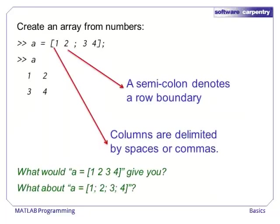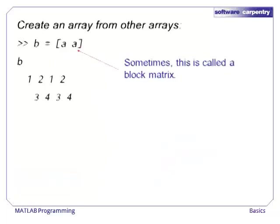Arrays can be created from the MATLAB prompt. When you assign an array, the entire set of numbers is enclosed in brackets. Elements in the same row are separated by spaces or commas, and a semicolon denotes a row boundary. Just like in linear algebra, a row array is different from a column array. Sometimes, it is helpful to create a block array by using other arrays rather than scalars in the definition.